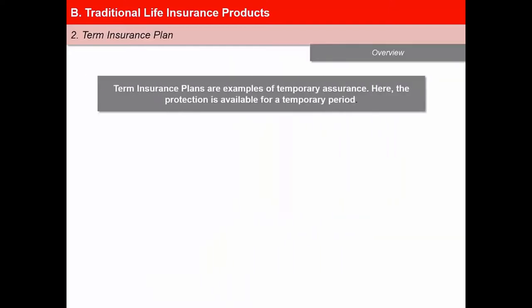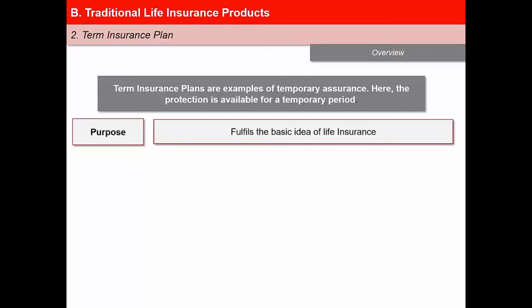Term insurance plans are examples of temporary assurance. The protection is available for a temporary period; the term can range between 1 year to 35 years. There is no savings or cash value element accruing to the insured. The plan only provides death benefit and there is no survival benefit. The purpose is to fulfill the main and basic idea behind life insurance — if the life insured dies prematurely, there will be a sum of money available to take care of his or her family.